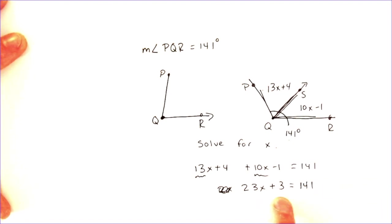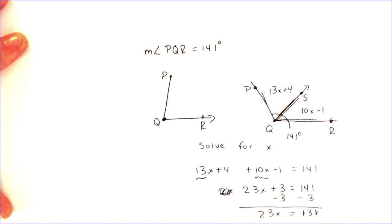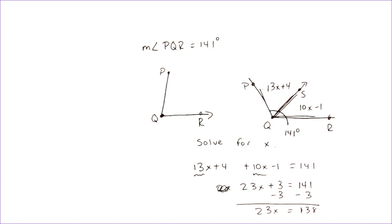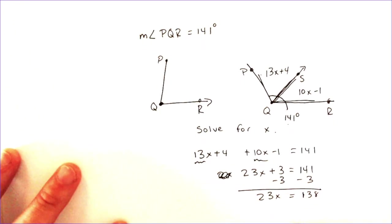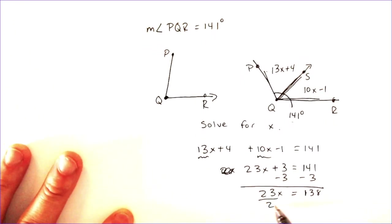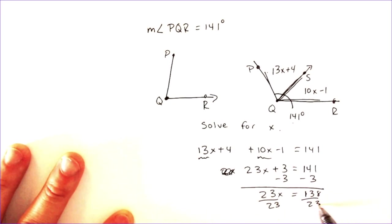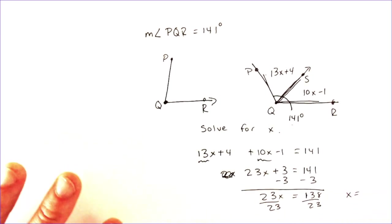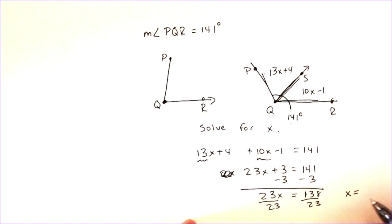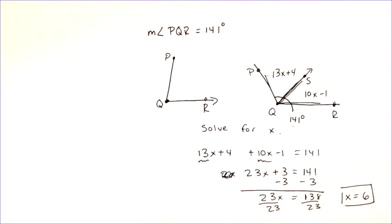From here, we're going to have to subtract the 3 to get 23x is equal to 138. So, we have to divide 138 by 23. So, I'm going to divide by 23, and I'm going to get my x is equal to 138 divided by 23. After taking a while to find my calculator, when I divided them, I got x is equal to 6. So, there we go.